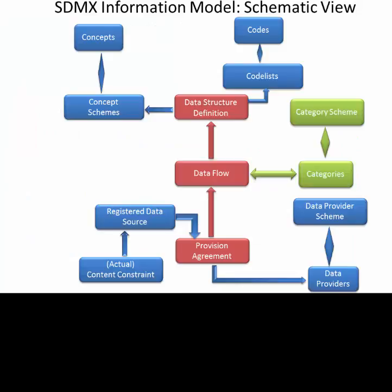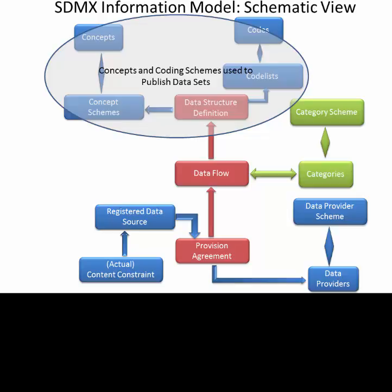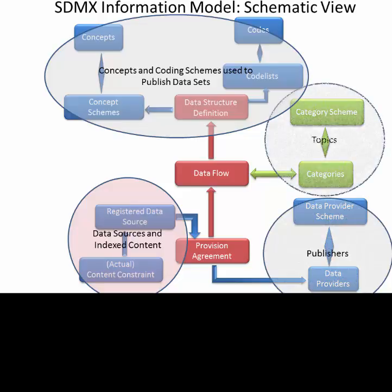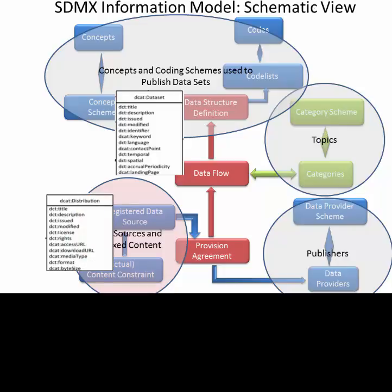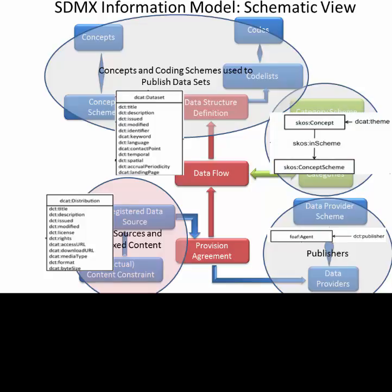Here is a schematic of the SDMX information model. We have the concepts and coding schemes used to structure the data, the sources of the data, the organisation providing the data, and the topic scheme that assists in data discovery. The data flow in SDMX is the dataset in the DCAT-AP model, and dimensions, attributes and unit of measure in STAT-DCAT-AP map to the components in the data structure definition. The distribution of STAT-DCAT-AP is the registered data source, and the data publisher in STAT-DCAT-AP is the data provider in SDMX. SDMX also has a category scheme that can contain the topic scheme and link it with the data flow, which is equivalent to the theme taxonomy in STAT-DCAT-AP.